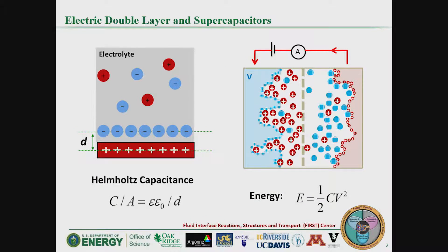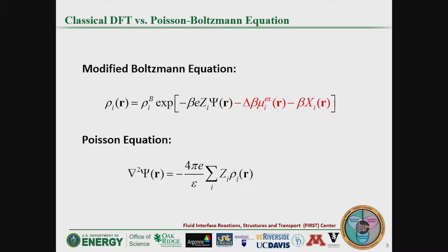As we know, ions near a charged surface will form electrical double layers. In the electrical double layer capacitor — or sometimes we call supercapacitor — the porous electrode will absorb ions to form electrical double layers and store energy. The supercapacitor has high power but low energy, so our goal is to improve the energy. Energy is related to capacitance and the potential window, so by increasing capacitance and the potential window, we can get more energy. Here, we use classical density functional theory, or classical DFT, to study the supercapacitor.